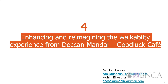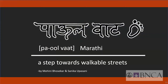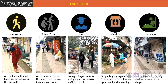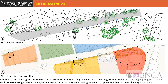The last intervention is enhancing and reimagining the walkability experience from Deccan Monday to Good Luck Cafe. The intervention is named Paulwat, which in the local language means a step towards walkable streets. The user profile was identified, and it seemed that right from homeless people to senior citizens, many people are frequent visitors of this space. The first map is the base map of our entire zone, while the second is the site plan with intervention. The design involves identifying and dividing the entire street into five zones, color-coding these five zones according to function, making it easy for navigation, and introducing three plazas, each serving a specific purpose.